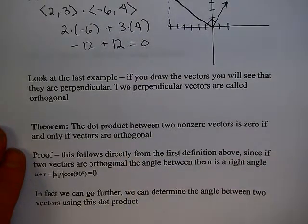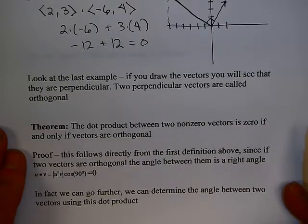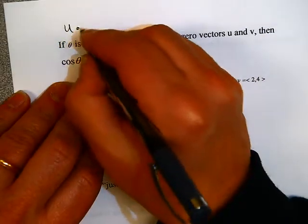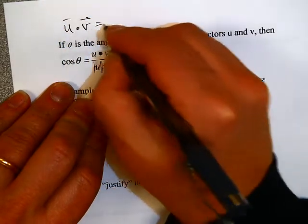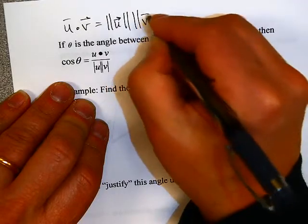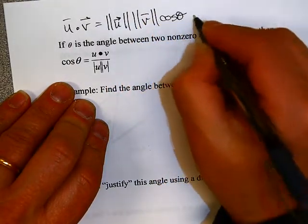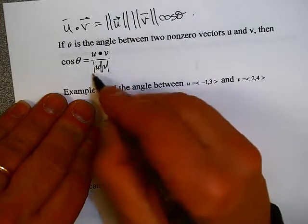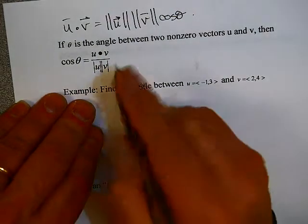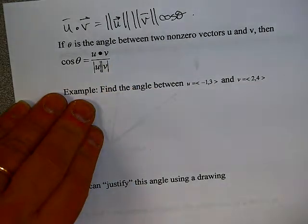We can also rewrite the dot product formula to help us find the angle between two vectors. Starting from u dot v equals magnitude of u times magnitude of v times cosine theta, and solving for cosine theta, you get cosine theta equals u dot v over magnitude of u times magnitude of v. This gives you a practical way to calculate the angle between two vectors.